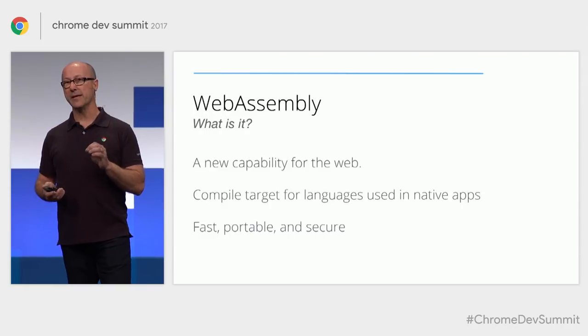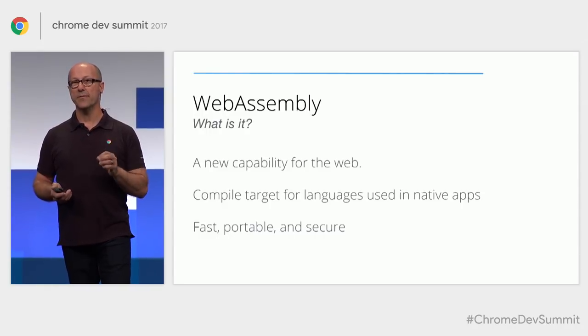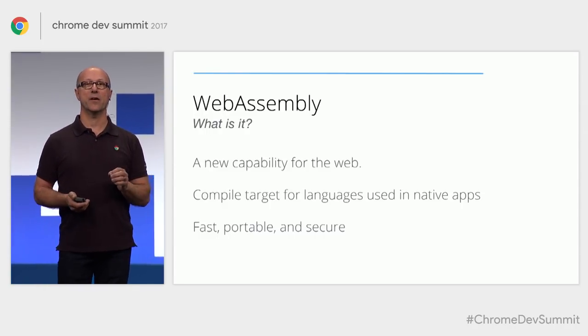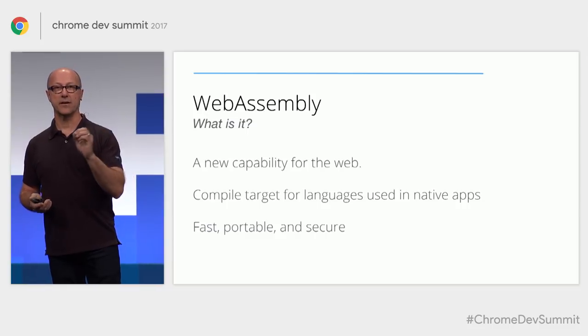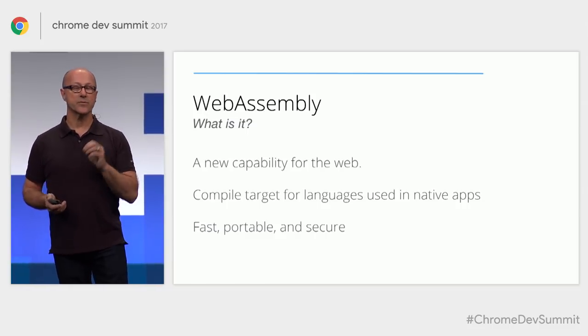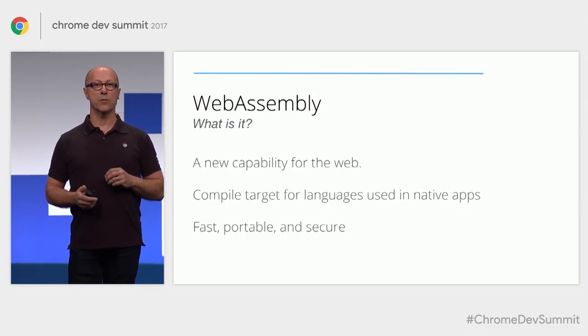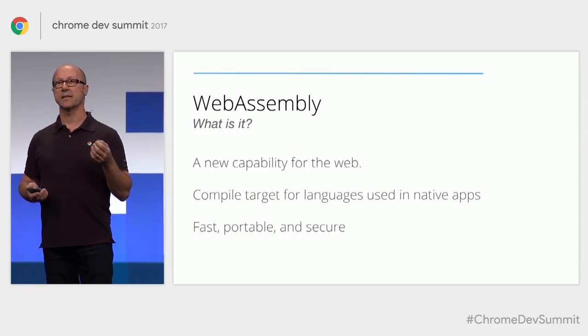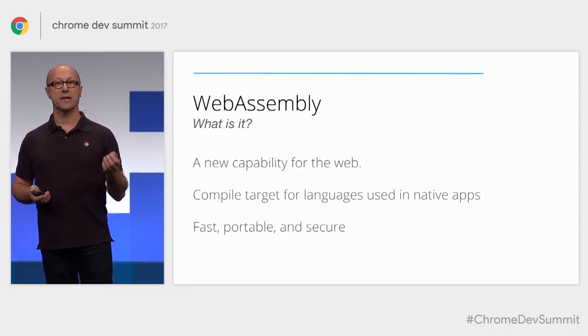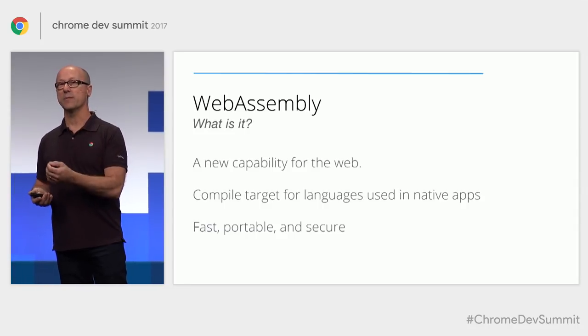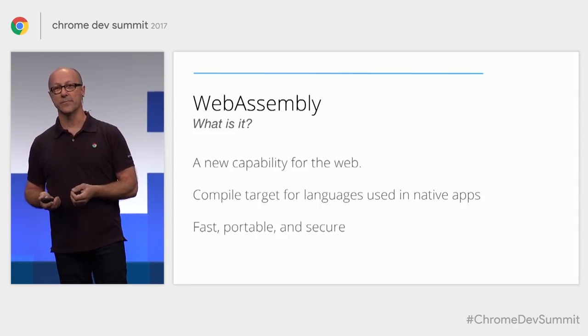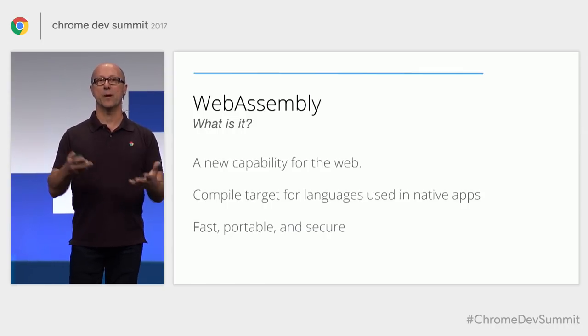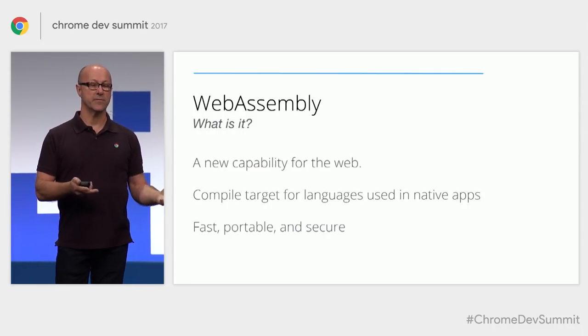What you need to understand is what WebAssembly actually is. It's a new capability for the web — a way that you can build really high-performance code and have it run inside your web application. It's not a replacement for JavaScript; it works alongside JavaScript. It enables you to take things like C++ and Rust, compile them into a WebAssembly module or WASM module, load it into your web app, and call it from JavaScript.